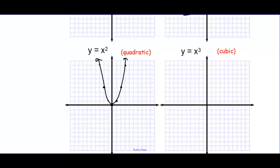We also have the cubic, y equals x to the third. 0 to the third is 0. 1 to the third is 1. 2 to the third is 8, right there. So there is half of the graph. Then negative 1 to the third is negative 1, and negative 2 to the third gives negative 8. So there would be the other half. There is the parent function y equals x to the third.